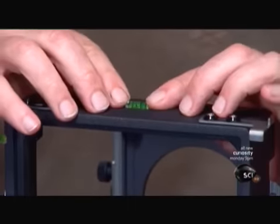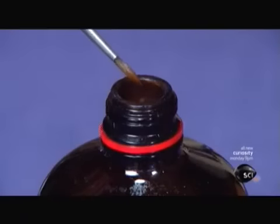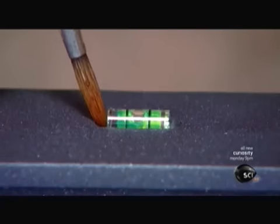He inserts spirit levels into the slots in the front and rear sections of the camera. These levels will be used to check the angle of the shot.